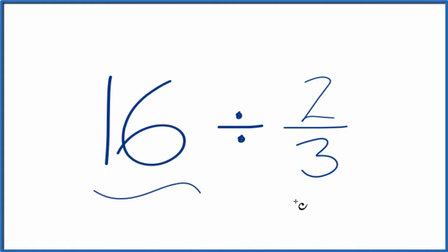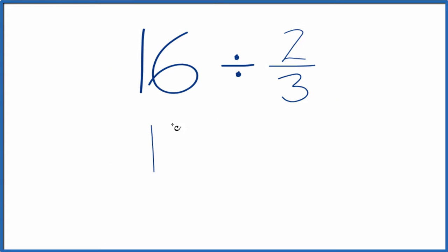If you're asked to divide 16 by 2 thirds, here's how you do it. Let's call this 16 over 1. It's still 16. We're just dividing by 1, but having this as a fraction, that's helpful.